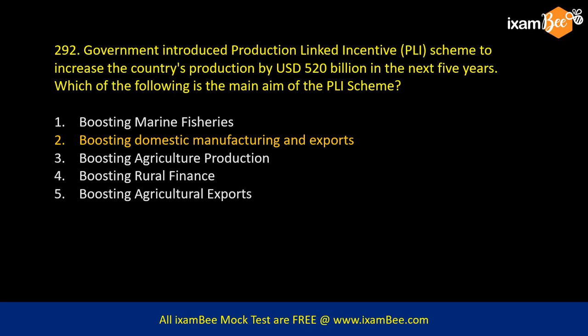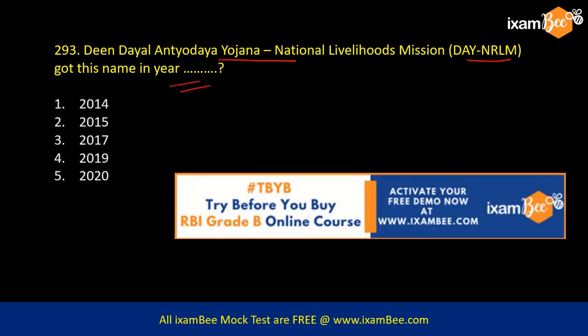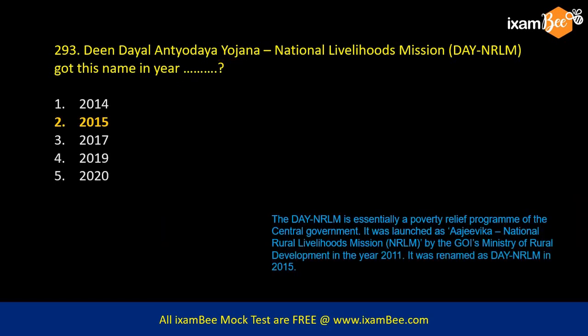Deen Dayal Antyodaya Yojana DAY-NRLM got its current name in which year? Earlier the name was Aajeevika NRLM, launched in 2011. But in 2015, after the BJP government headed by Mr. Modi came into power, it was renamed as Deen Dayal Antyodaya Yojana DAY-NRLM.